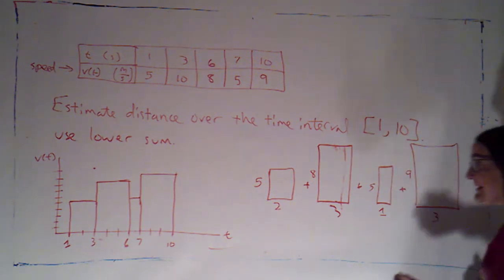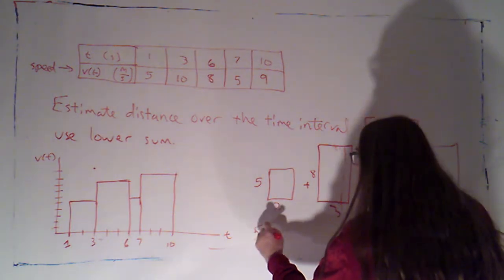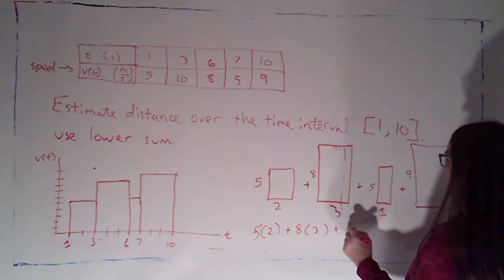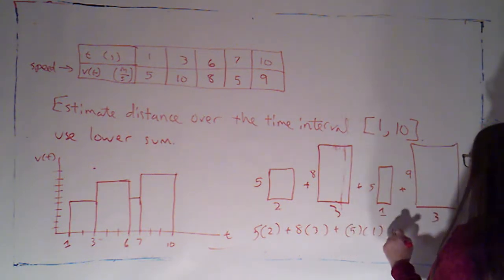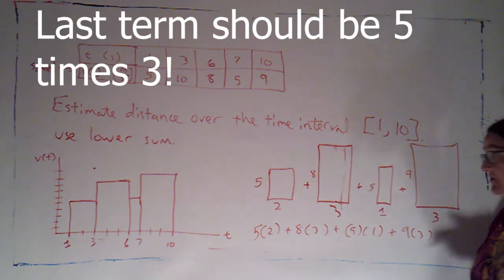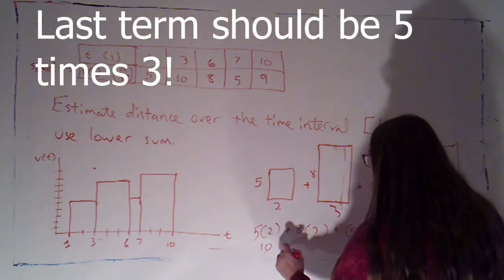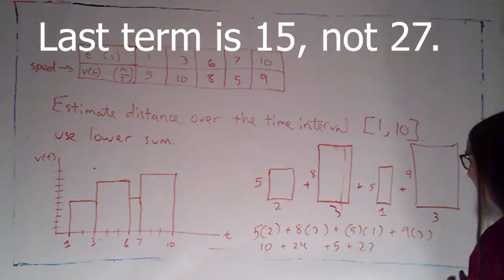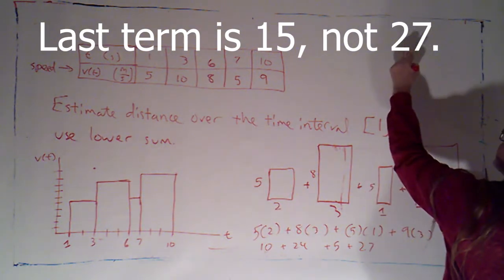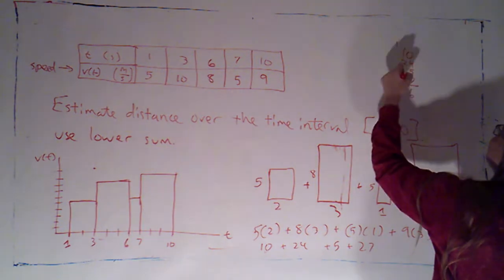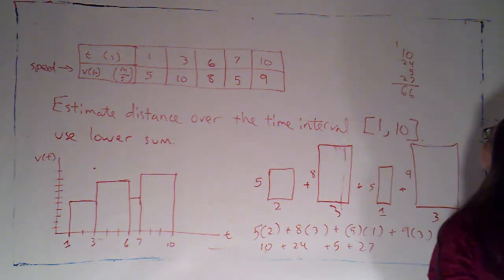So I can say my distance is approximately 5 times 2 plus 8 times 3 plus 5 times 1 plus 9 times 3. Here the bases aren't all the same so I can't factor those out. So this is just 10 plus 24 plus 5 plus 27. Oh dear. Arithmetic. 10, 24, 5, and 27. Looks like that's going to be 66. Okay.